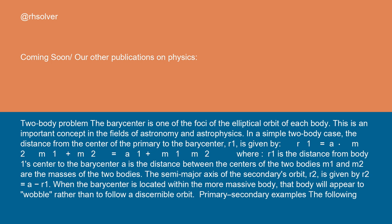In the two-body problem, the barycenter is one of the foci of the elliptical orbit of each body. This is an important concept in the fields of astronomy and astrophysics. In a simple two-body case, the distance from the center of the primary to the barycenter, R1, is given by...